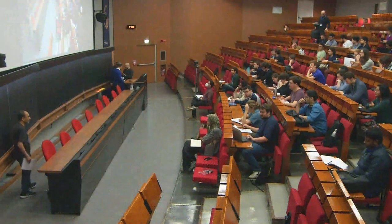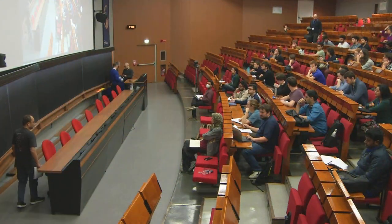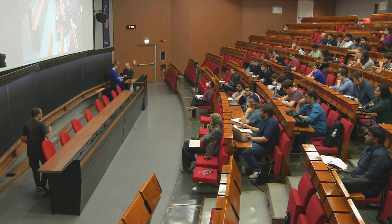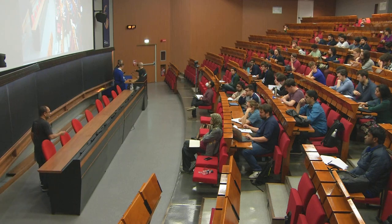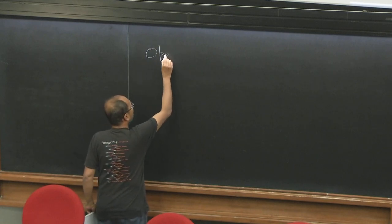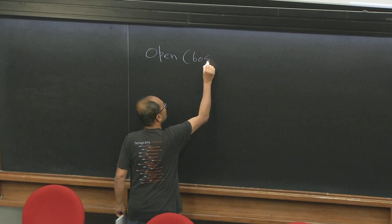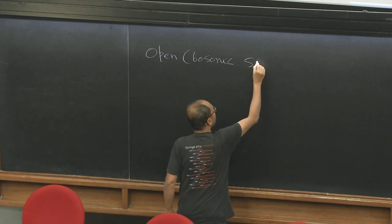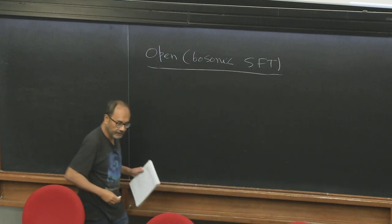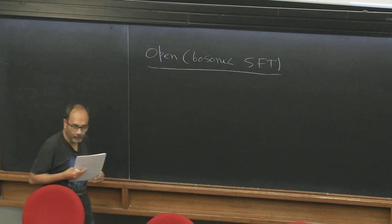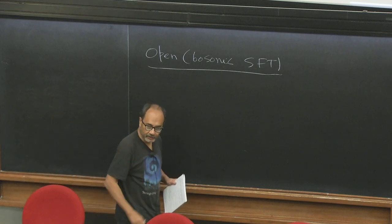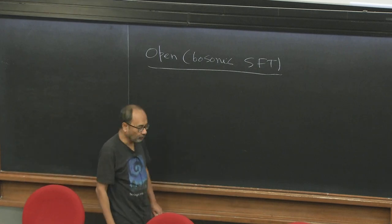Today we gave a general outline of how to do the calculation of the annulus partition function. Today we will give more details, but for that I have to give you the second dose of the bitter pill. So, some introduction to open bosonic string field theory. I will assume that you are at least somewhat familiar with the worldsheet formulation of string theory, and we will be talking about open worldsheets, which is simpler than closed worldsheets.